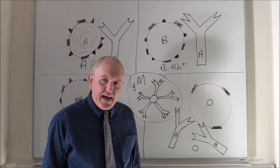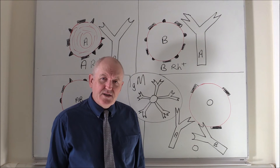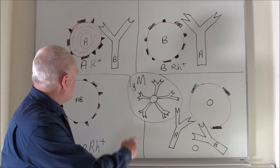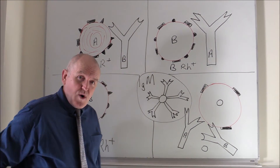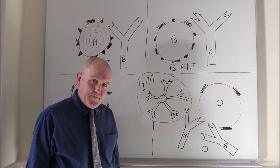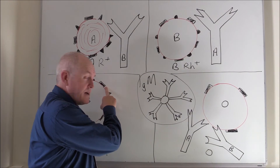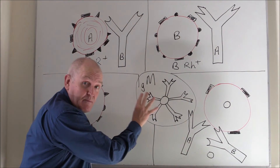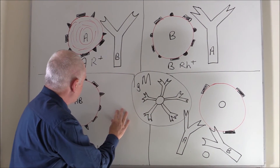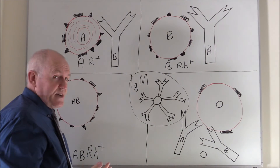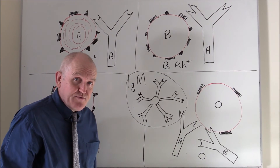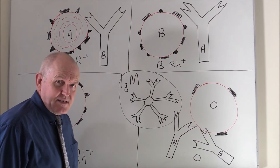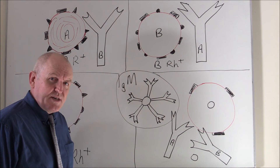Now, we have noted that in the ABO system there are naturally occurring antibodies in the plasma. With the rhesus factor, however, there are no naturally occurring antibodies. So if someone is rhesus negative, there will be no rhesus factor antibodies — no rhesus factor immunoglobulins — in the plasma. And whether someone's rhesus positive or rhesus negative makes no difference; there still will be no rhesus factor antibodies in the plasma, because they are not naturally occurring.